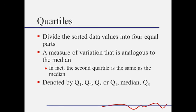Let's talk next about quartiles. Quartiles divide the data into four equal parts, and this is our measure of spread that goes along with the median. In fact, the second quartile is the same as the median. So think about cutting up a piece of cake into four pieces. What we might do is cut it in half and then take each of those halves and cut them in half again. And that's exactly what we're going to do with the quartiles.